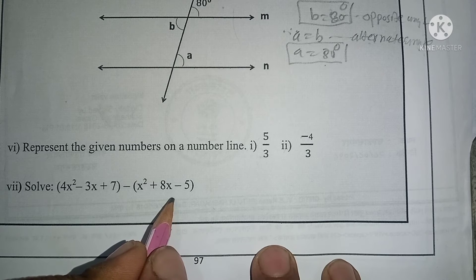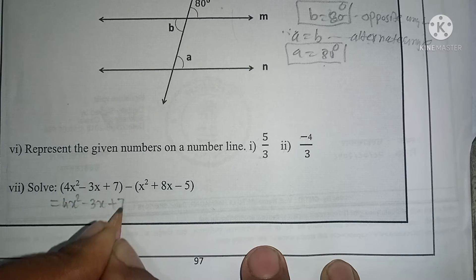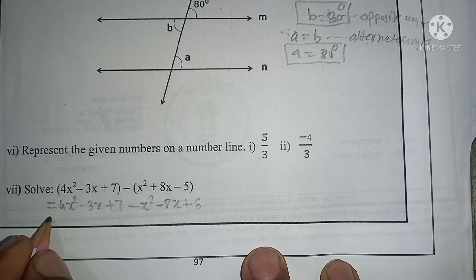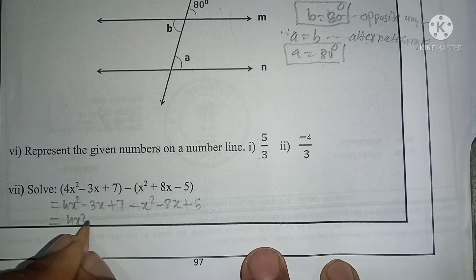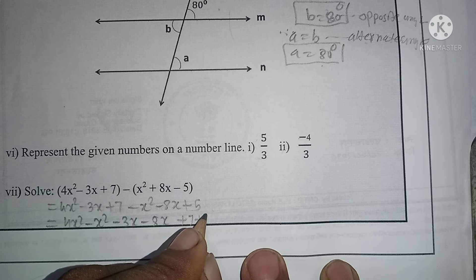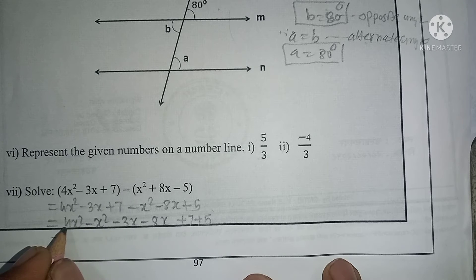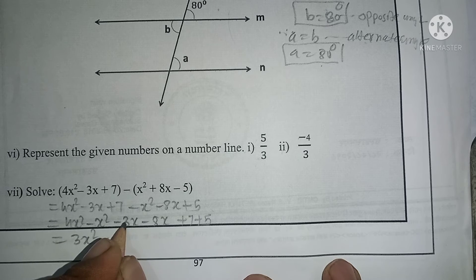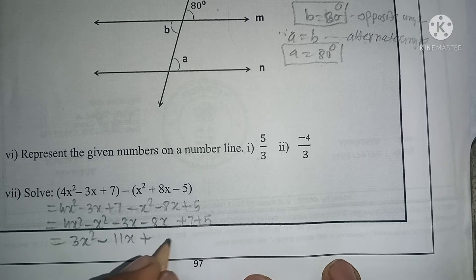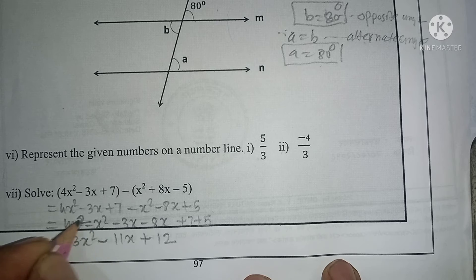Question 4: Subtract the polynomial (4x squared minus 3x plus 7) minus (x squared minus 8x plus 5). Combining like terms: 4x squared minus x squared equals 3x squared; minus 3x minus (minus 8x) equals minus 3x plus 8x equals 5x — wait, minus 3x and minus 8x gives minus 11x; and 7 plus 5 equals 12. The answer is 3x squared minus 11x plus 12.